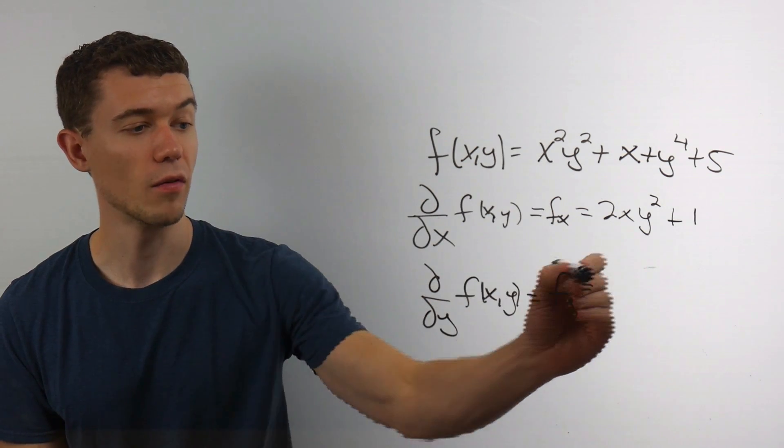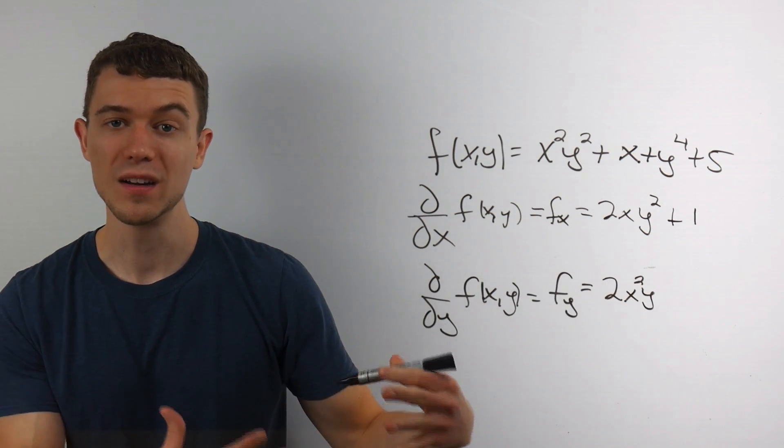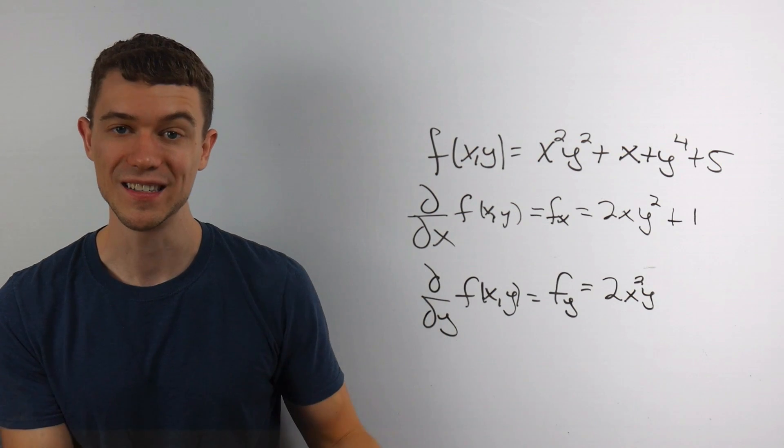So what's the derivative of y squared? Well, again, it's 2y. And I'll keep the x squared, just pretending it's like a constant.